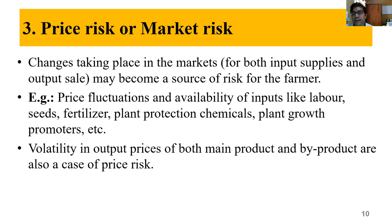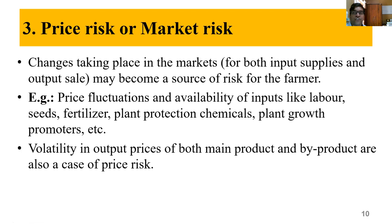We have price risk — uncertainty of both output prices and input prices. Apart from price, we also have the factor of availability: if inputs are not available, that is also a risk — market risk, since the farmer has to purchase inputs from the market. We also have volatility: variations in output prices of both the main product and by-products. The farmer is not sure what price he will get, and also not sure of what input prices will be.